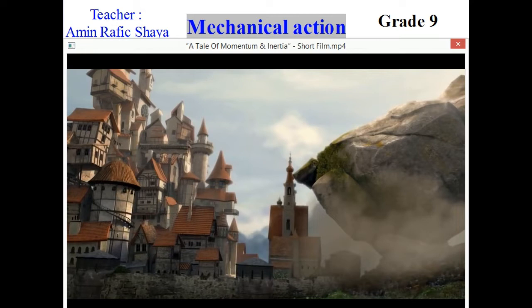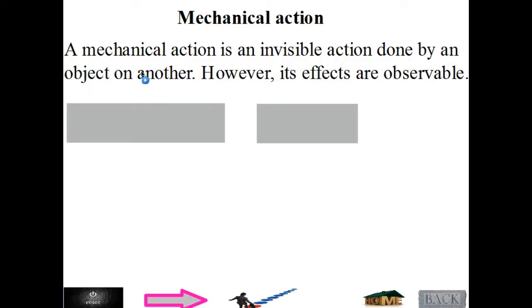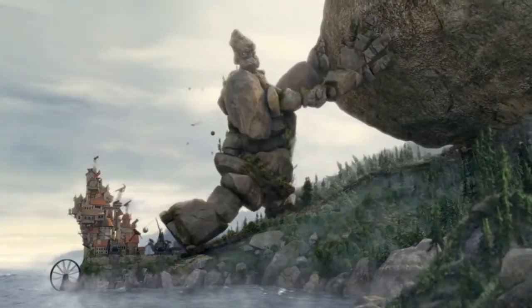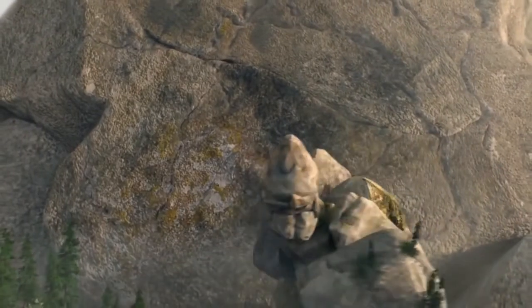So what do we mean by mechanical action? A mechanical action is an invisible action done by an object on another object. We cannot see the mechanical action; however, its effects are observable. The rocky man did mechanical action when we saw the effect — by stopping the rock, or decreasing its velocity, or setting the rock in motion, or changing its shape.